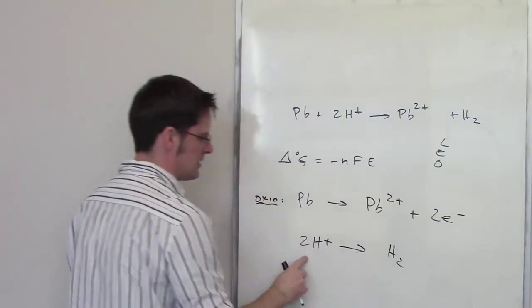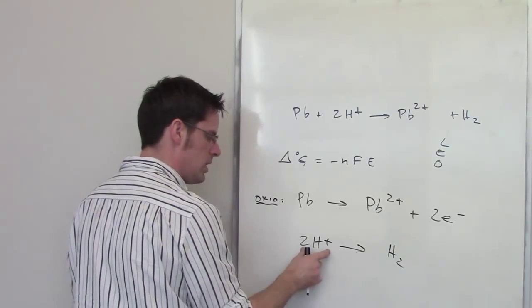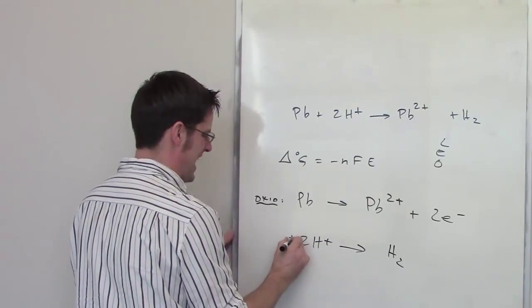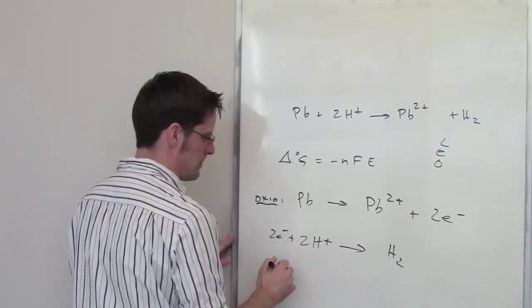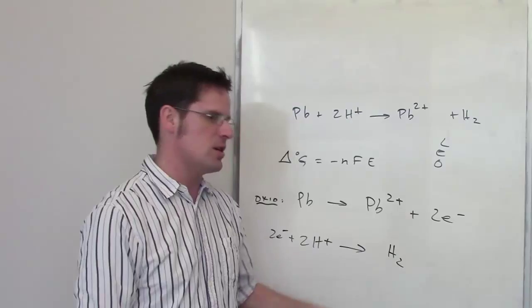Now, separately, you can see, balance-wise or charge-wise, I've got zero charge on this H2. I've got positive 2 charge on the left side of the equation. To balance that out, I need to add two electrons to the left side of the equation. You can see the hydrogen's going from having a positive 1 oxidation number to having a zero oxidation number.